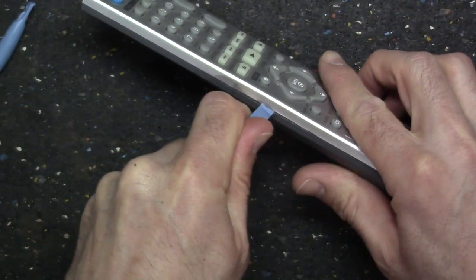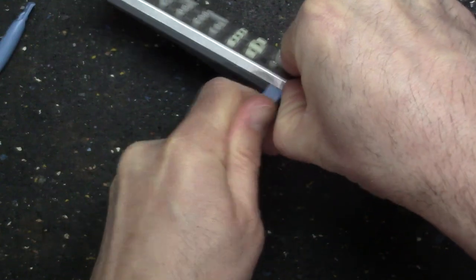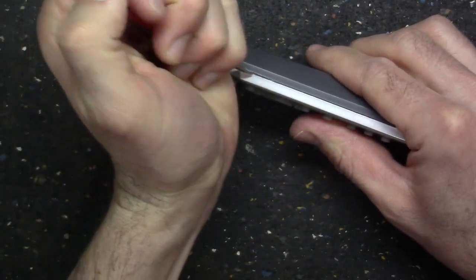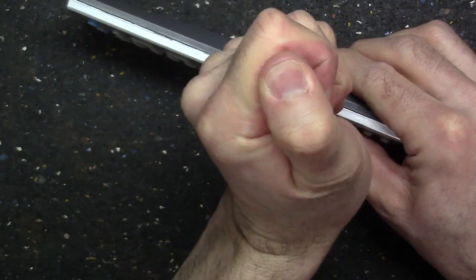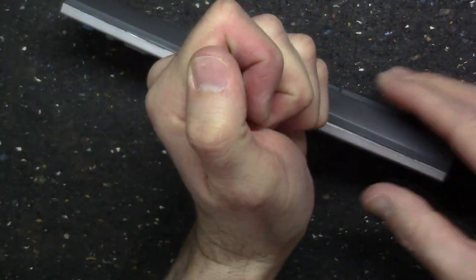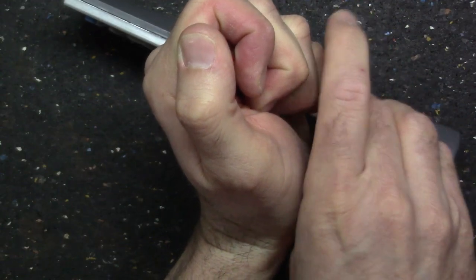So you have to open it up. Now you can use a plastic tool so you don't damage it so much. You're going to have clips all the way around holding it together, and there might be a screw inside the battery compartment to make it easier. Sometimes they do that.